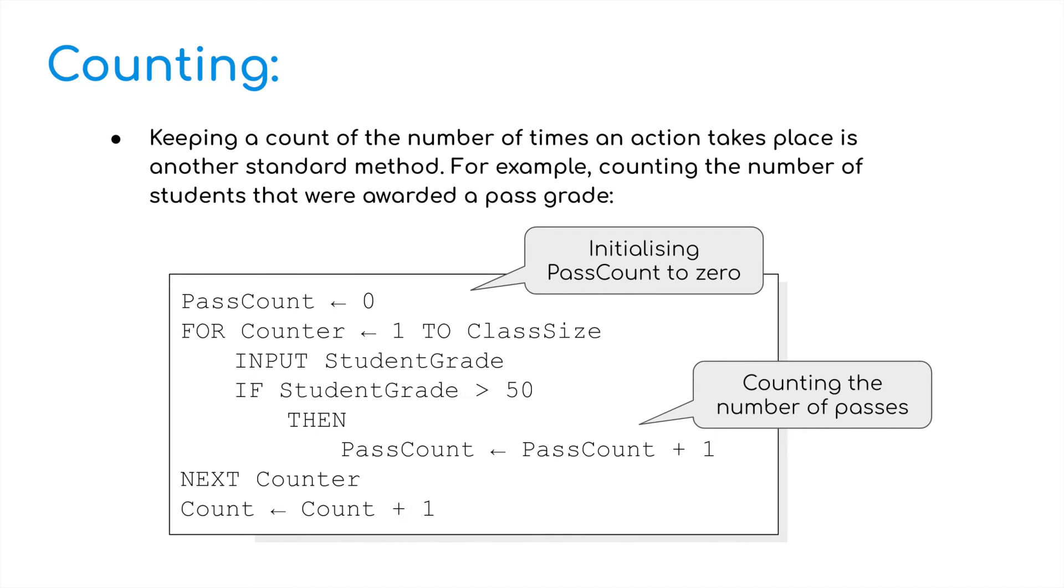We then have counting. Keeping a count of the number of times an action takes place is another standard method. For example, counting the number of students that have been awarded a pass grade. We start, we initialize pass count. The variable pass count to have a value of 0. We're assigning 0 to that. For the counter, we're going to again assign 1 to how many people are in the class. We're going to input the student grade.